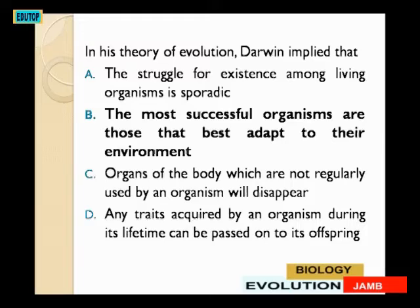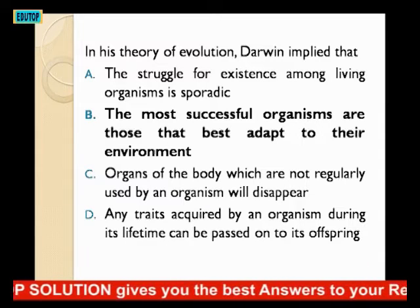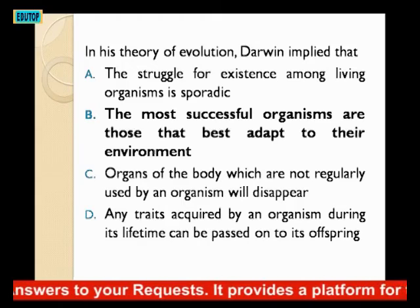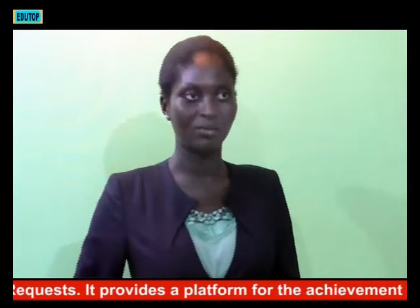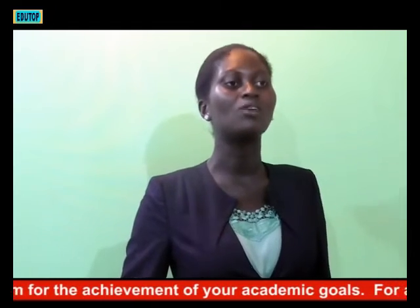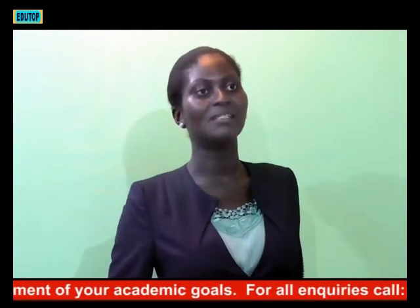In the theory of evolution, Darwin implied that — A: the struggle for existence among living organisms is periodic; B: the most successful organisms are those that best adapt to the environment; C: organs of the body not regularly used by an organism will disappear; D: any traits acquired by an organism during its lifetime can be passed on to offspring. Options C and D are Lamarck's theory. The answer is B — survival of the fittest: the most successful organisms are those that best adapt to their environment.